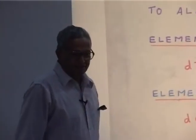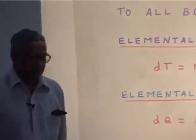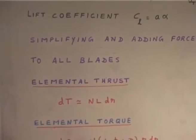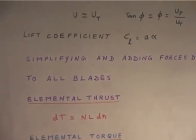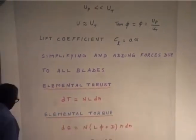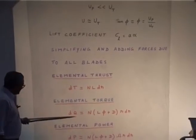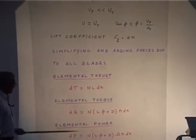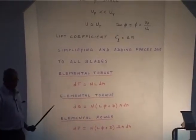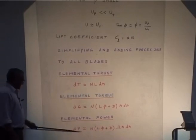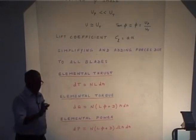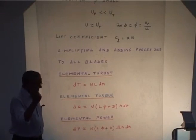Today we will look at the elemental thrust for linear twist and ideal twist. Specifically, we will examine these two expressions: the torque coefficient and the power related to the rotor.